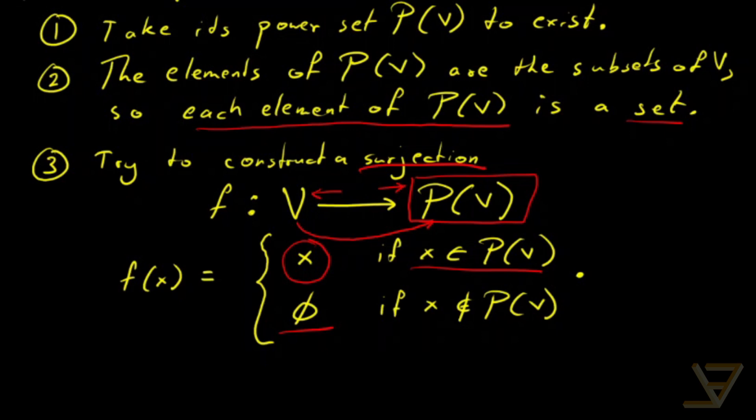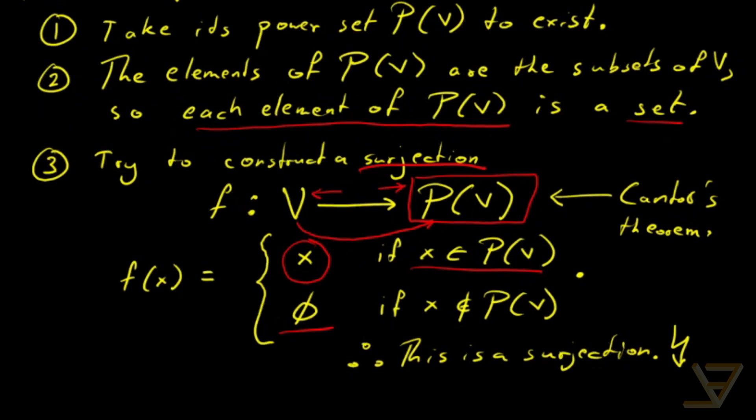So therefore, this is a surjection. And that's a contradiction because we can't have a surjection from V to the power set of V according to Cantor's theorem. So that's the contradiction that we seek and there can be no set of all sets.